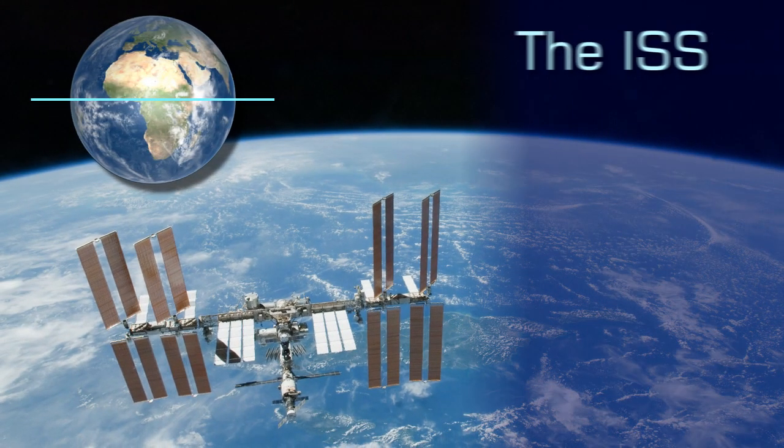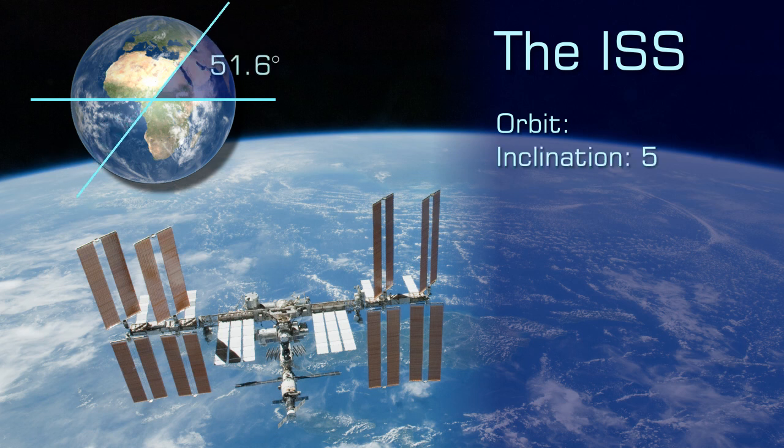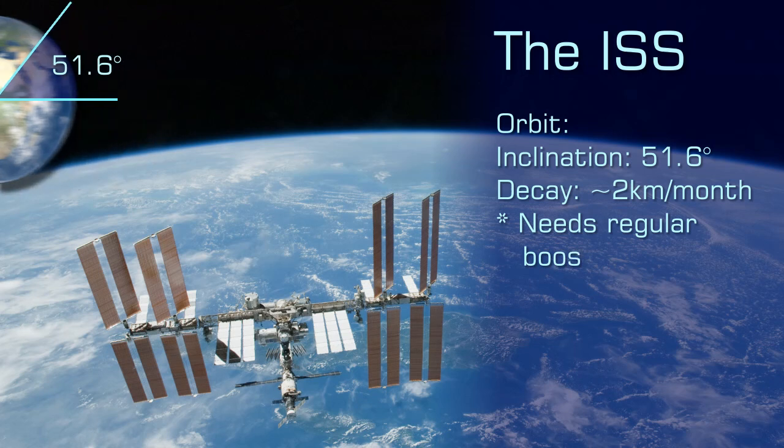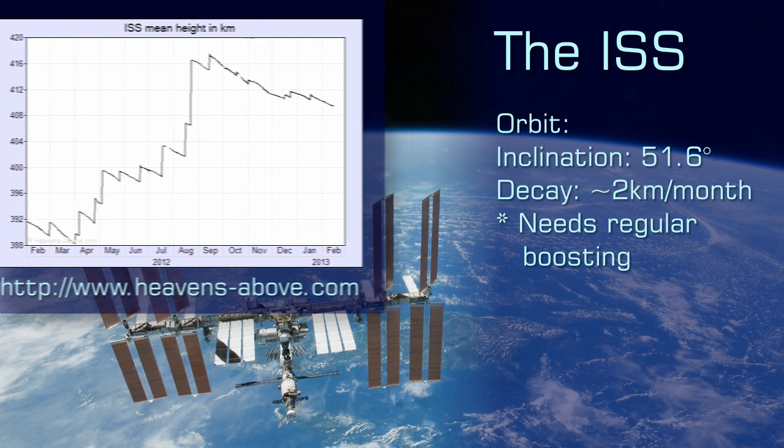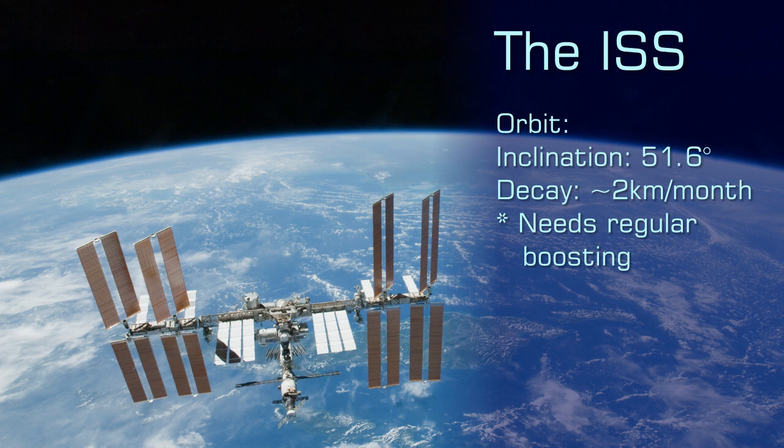Its orbit is inclined at 51.6 degrees to the equator. It suffers orbital decay due to drag of about 2 km altitude per month, so the altitude of its orbit needs regular correction. It's consistent enough from one night to the next that we don't need to worry about it here.